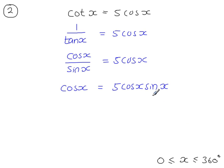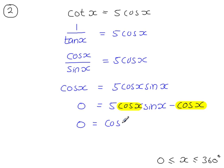And then subtract cos x from both sides. So that term moves to the right. And now factorise. Because both of these terms have cos x in them. So if I take the cosine of x out, I will have this. 5 sine x minus 1 in brackets.